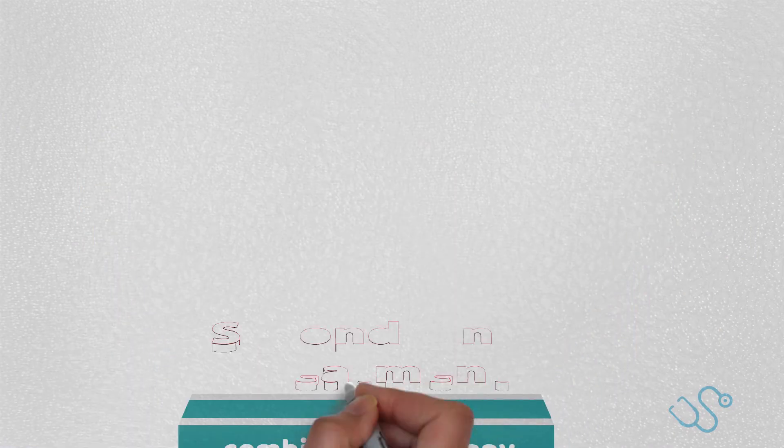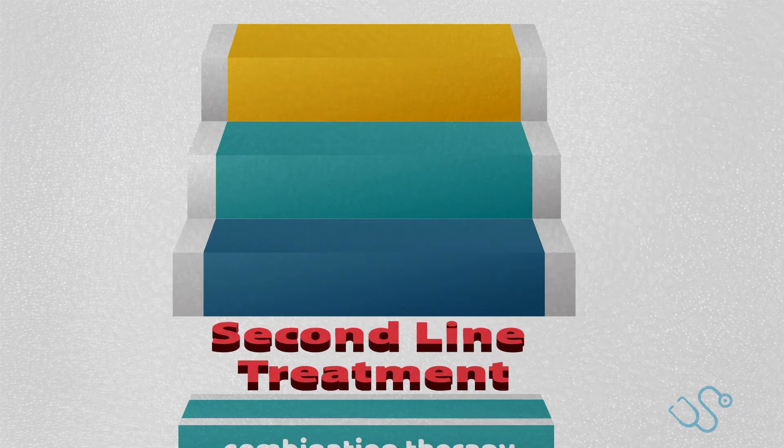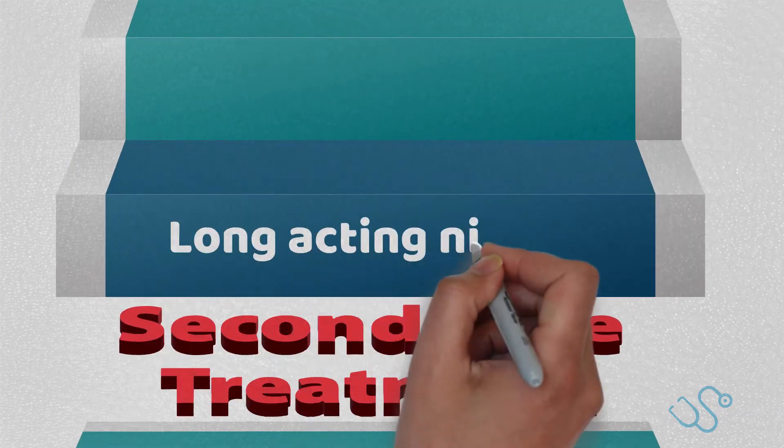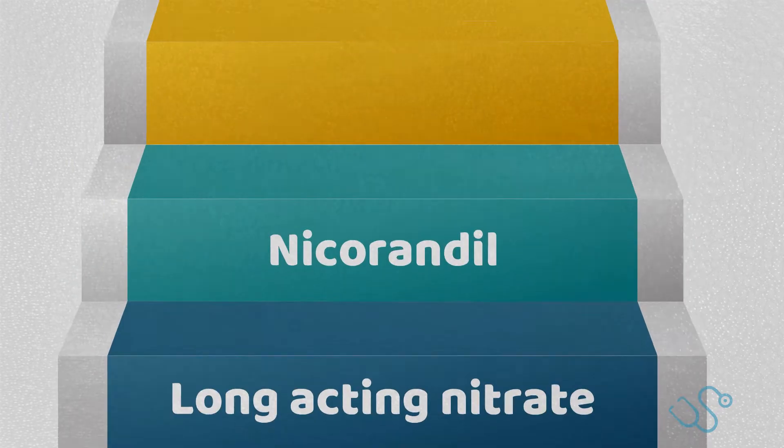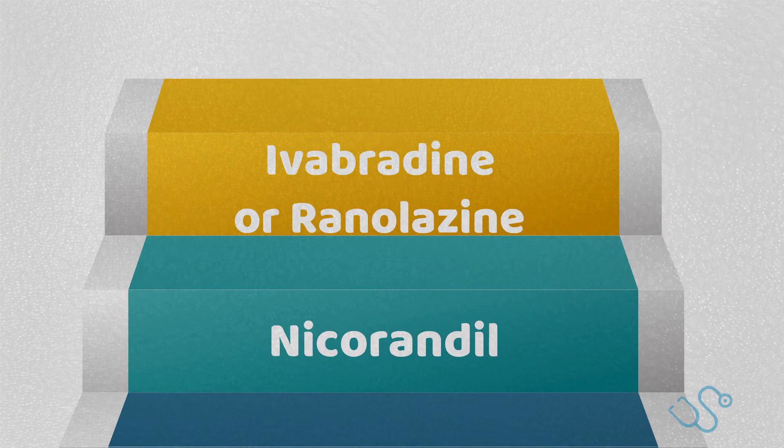If this isn't tolerated, then second-line treatment can be considered, which usually is a choice between a long-acting nitrate, nicorandil, ivabradine, or ranolazine, depending on the patient's medical background.